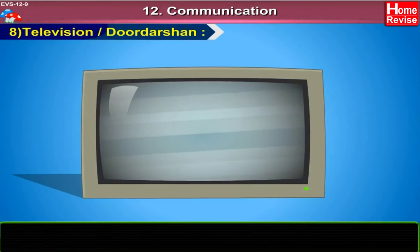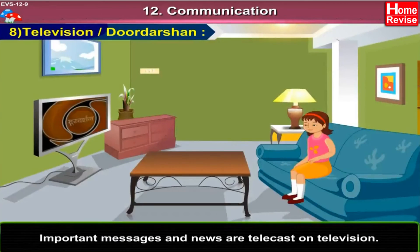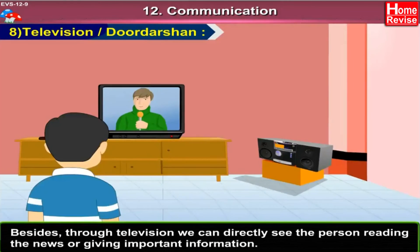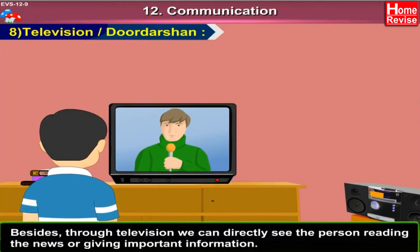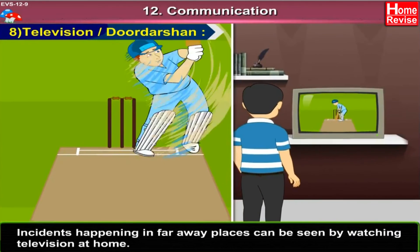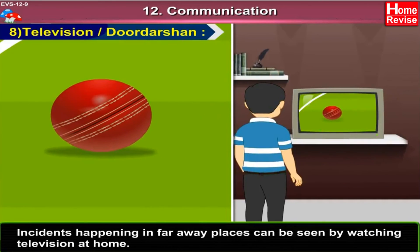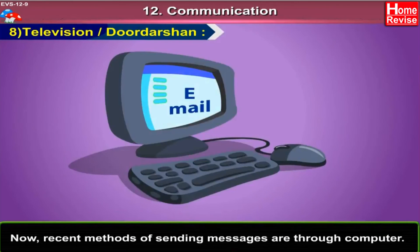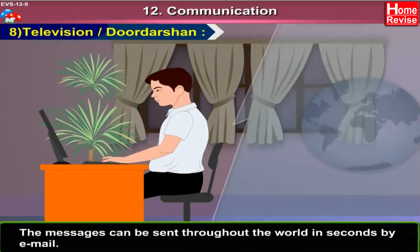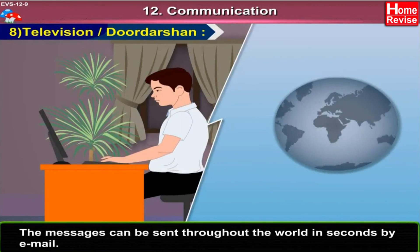8. Television or Doordarshan. Important messages and news are telecast on television. Besides, through television, we can directly see the person reading the news or giving important information. Incidents happening in faraway places can be seen by watching television at home. Now, recent methods of sending messages are through computer — messages can be sent throughout the world in seconds by email.